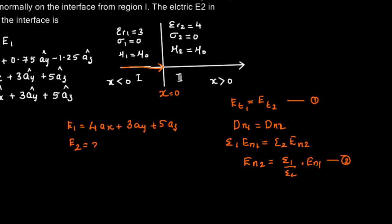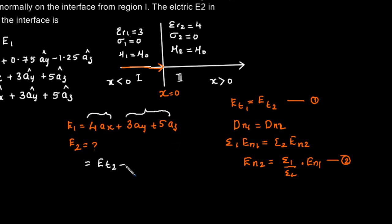We can identify that the normal component is 4ax and the tangential component is 3ay plus 5az. The electric field in medium 2 can be written as the tangential component plus the normal component. The tangential component of electric field is continuous, so the tangential part remains 3ay plus 5az.